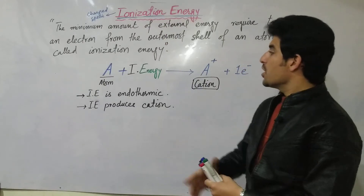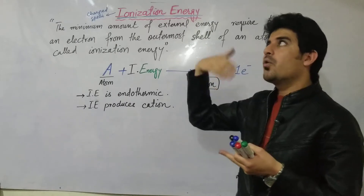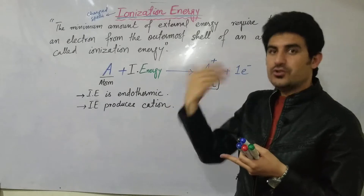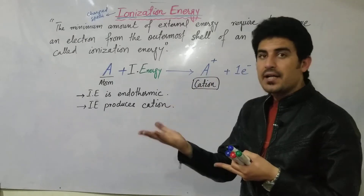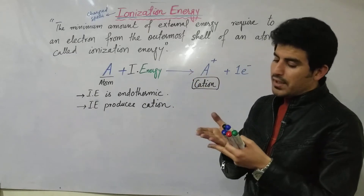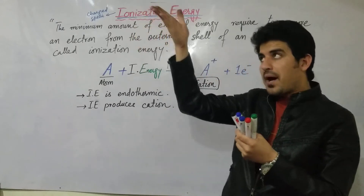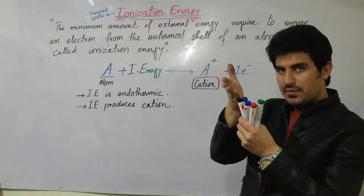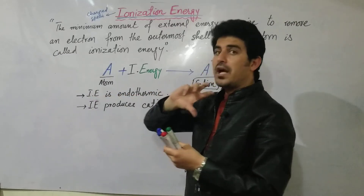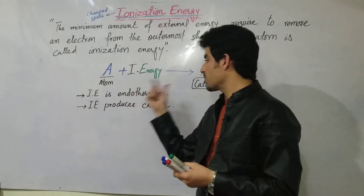When external energy approaches an atom, it can come in the form of electric shock, heat energy, sunlight, or any other form of energy. This energy collides with the atom and removes an electron from it. Because energy is coming from outside into the system, ionization is actually an endothermic process.